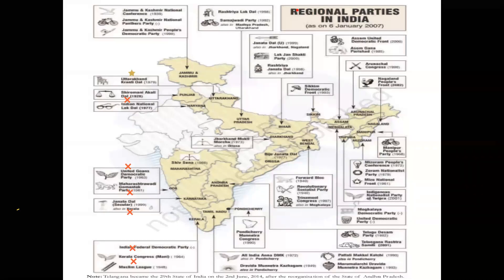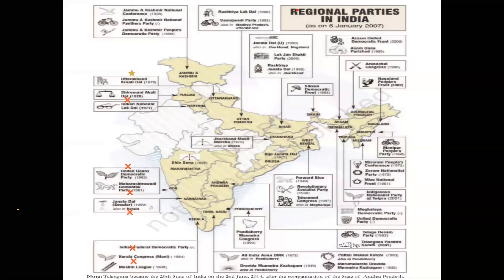Presently in our central government, there are three main alliances. First is UPA — United Progressive Alliance, supported by many regional political parties. Second is NDA — National Democratic Alliance, currently in the central government, with Bharatiya Janata Party as the most leading political party, supported by many smaller groups. And third is the Left Front, comprising CPI and CPI(M), with many other political parties also supporting the left front. Many regional political parties play an important role in Indian politics.